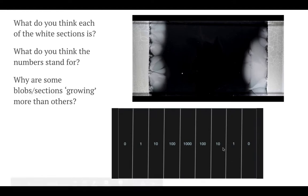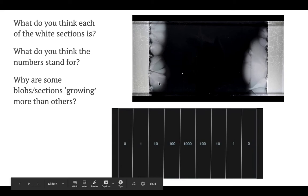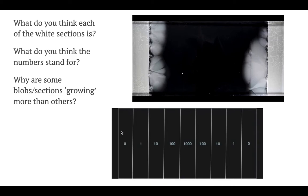The first question is: what do you think each of these white blobs or sections are? What do you think these numbers represent? And why do you think some of these blobs are growing bigger, faster, or in larger spaces than others?